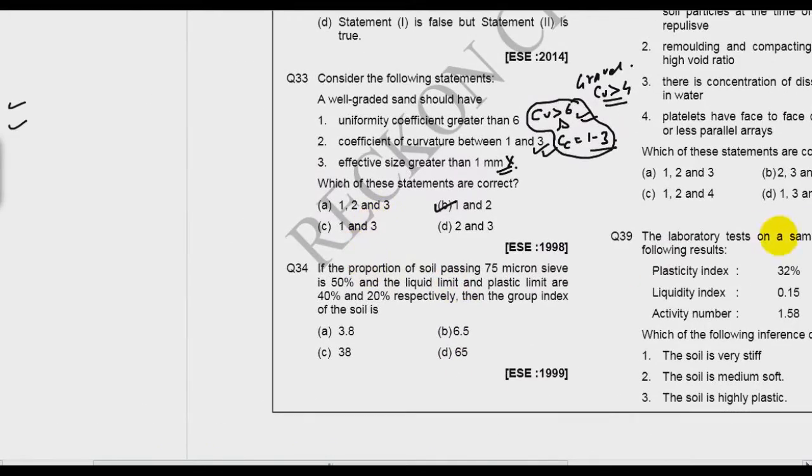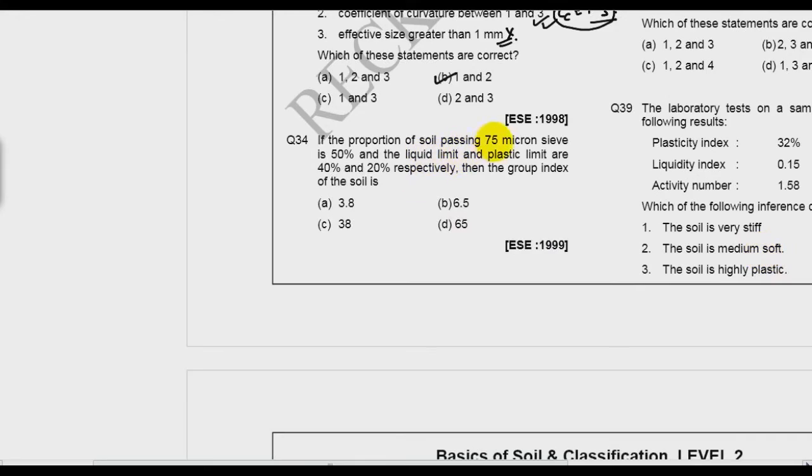Now let us take question number 34. If the proportion of soil passing through 75 micron sieve is 50, liquid limit and plastic limit are 40 and 20 respectively, then the group index of the soil is. It is a question in which you should remember the formula of group index. Please I advise you that there is a high possibility you will get a question of group index. So this is a lengthy formula.